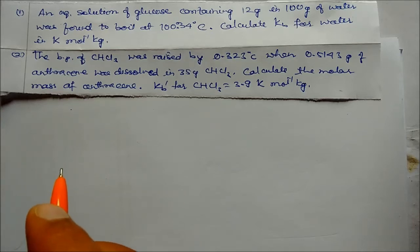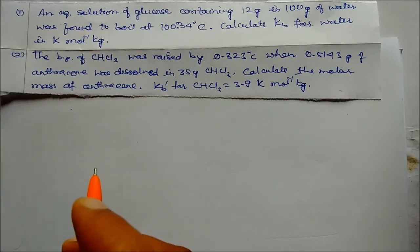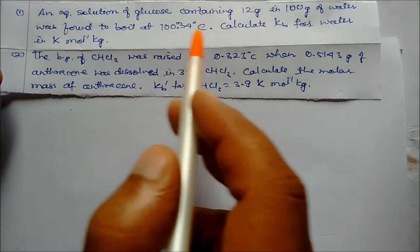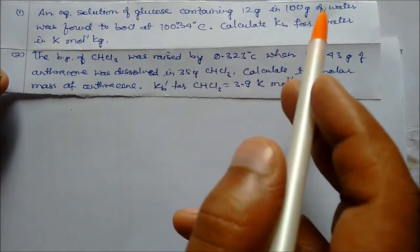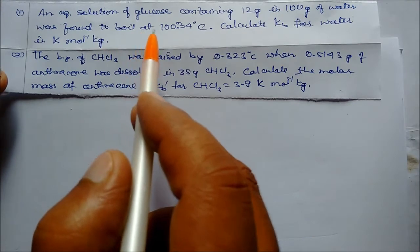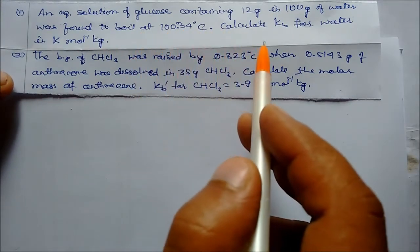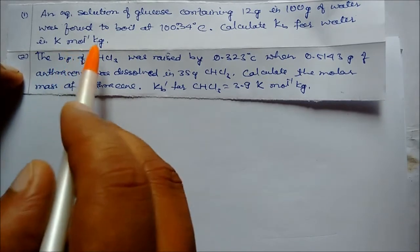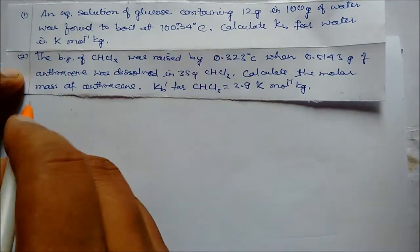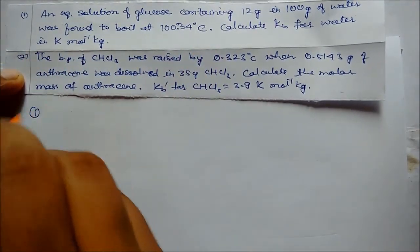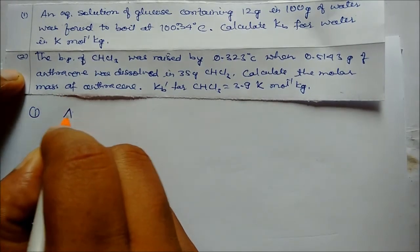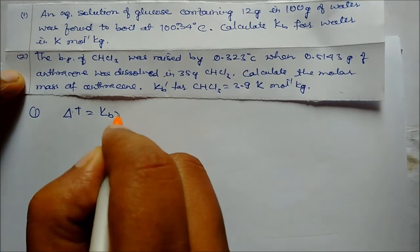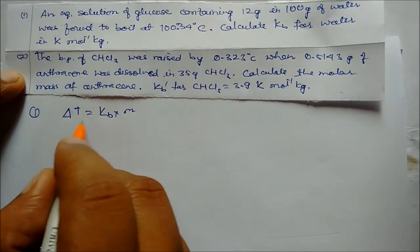We will solve a problem based on elevation of boiling point. An aqueous solution of glucose containing 12 grams in 100 grams of water was found to boil at 100.34°C. We use the formula: delta T = Kb × m, where delta T is the difference in boiling point temperature.